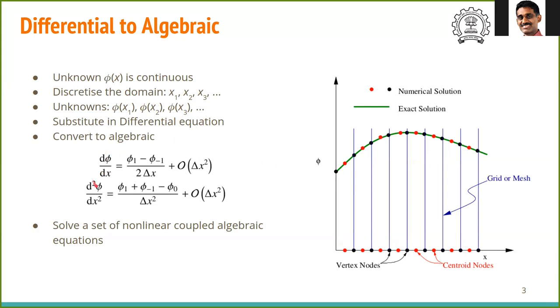As an example, the first derivative can be written in terms of a central difference formula such as this. D phi by dx equals phi 1 minus phi at minus 1 divided by 2 delta x. Similarly, for higher order derivatives. Since this discretization is done at all n locations, instead of solving one differential equation, we will be solving n algebraic equations. Instead of solving a set of coupled non-linear partial differential equations, we will be solving several coupled non-linear algebraic equations.